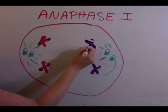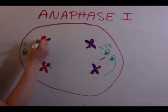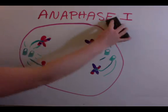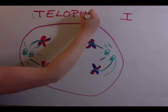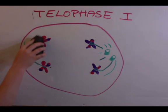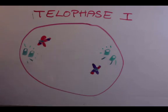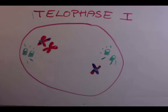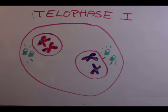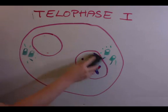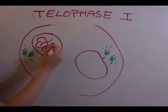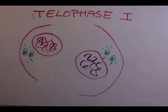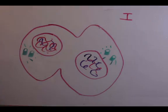In telophase 1, the nuclear membrane reforms, and the chromosomes relax. The first part of meiosis is complete during cytokinesis, which is going to result in two haploid cells.